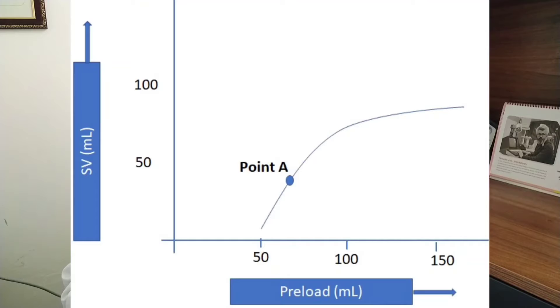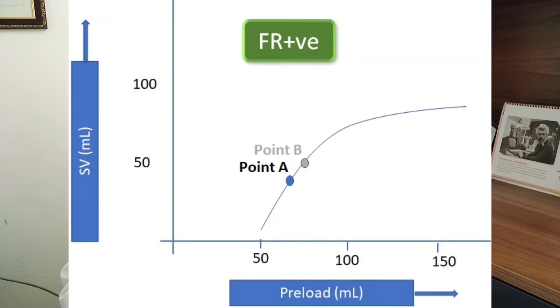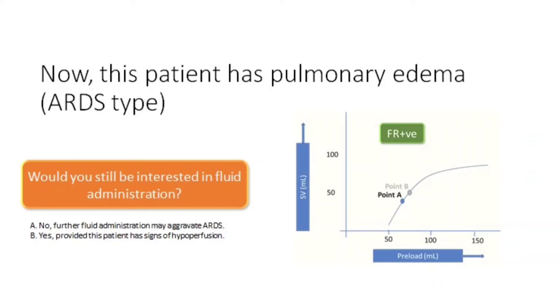Now assess this situation: if you increase the preload in this patient, what will happen? As can be seen in this example, the patient is fluid responsive because stroke volume increases with preload administration. But does that mean you should still give fluid? Is fluid responsiveness the same as necessitating fluid administration? What if this patient has pulmonary edema or ARDS — would you still be interested in fluid administration?